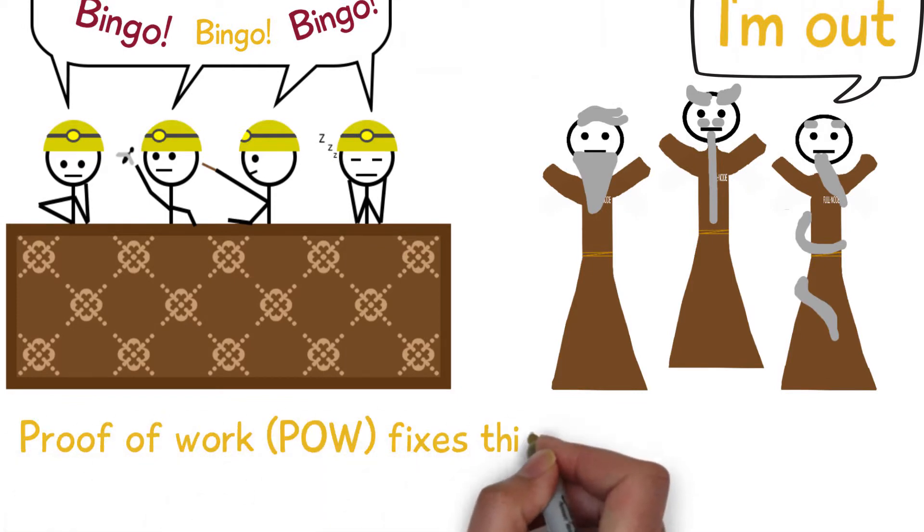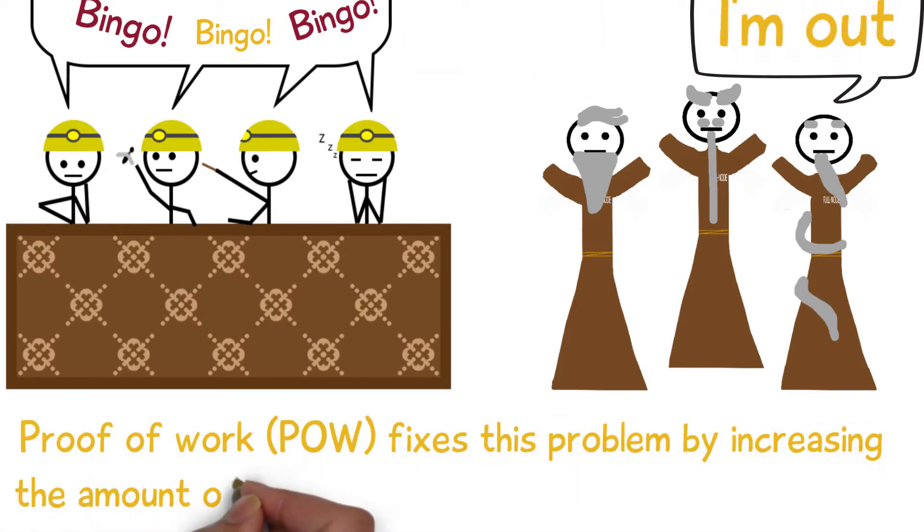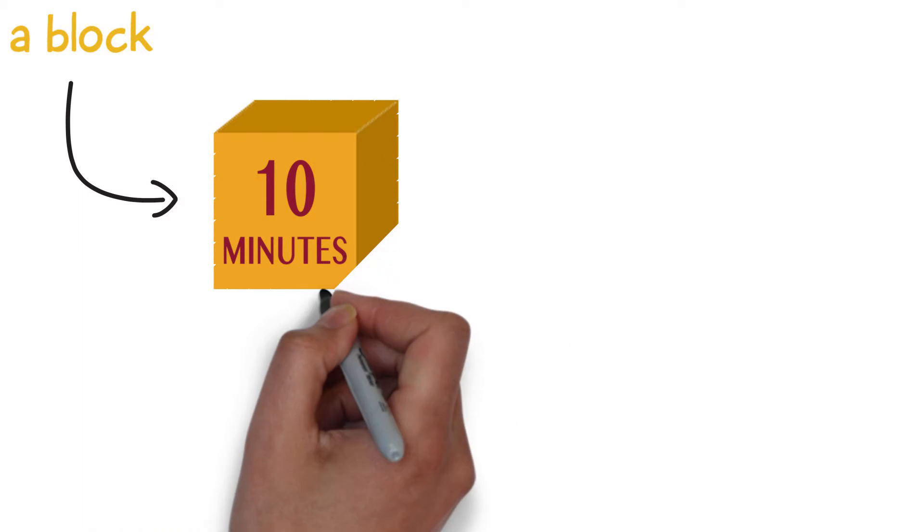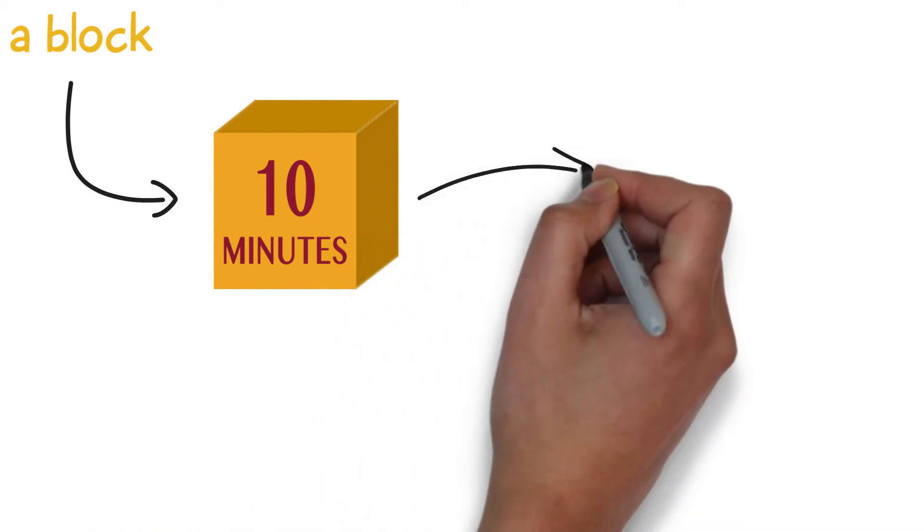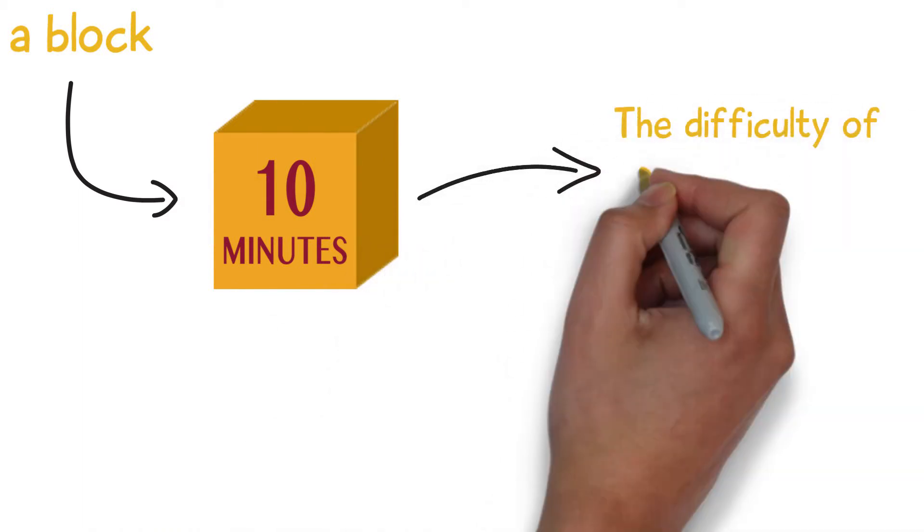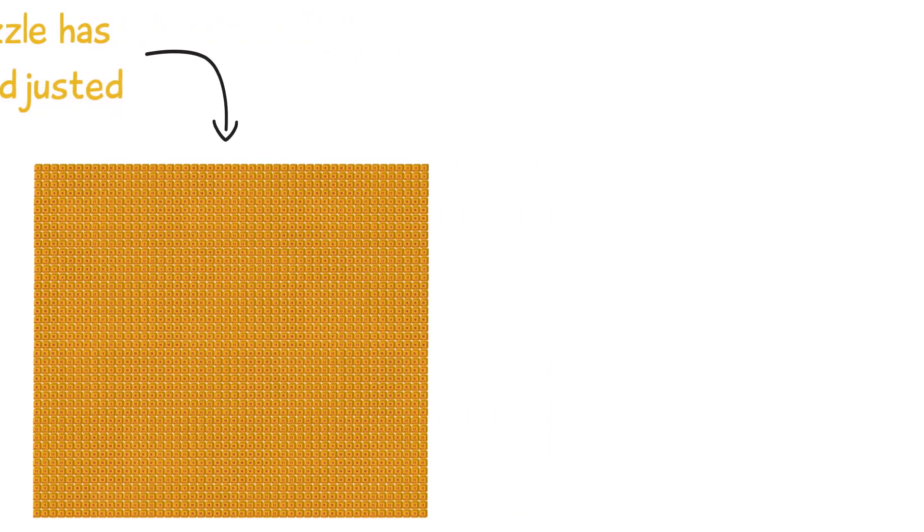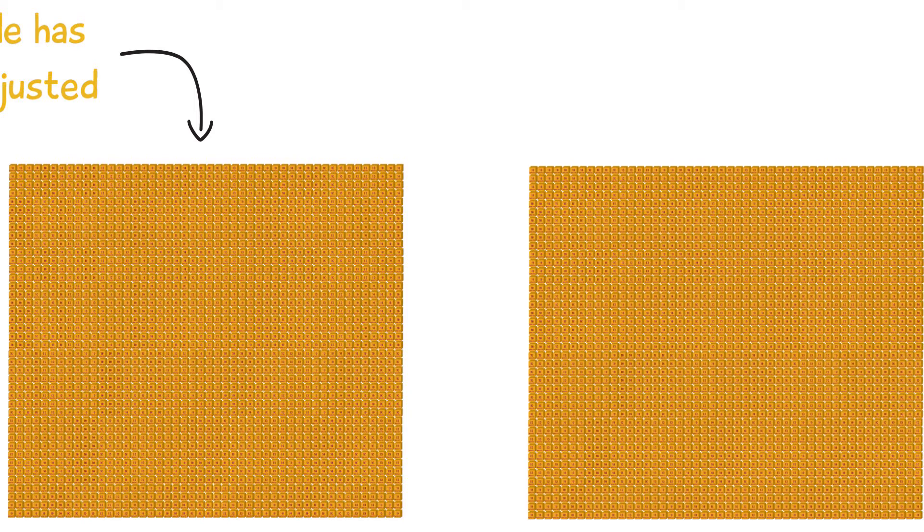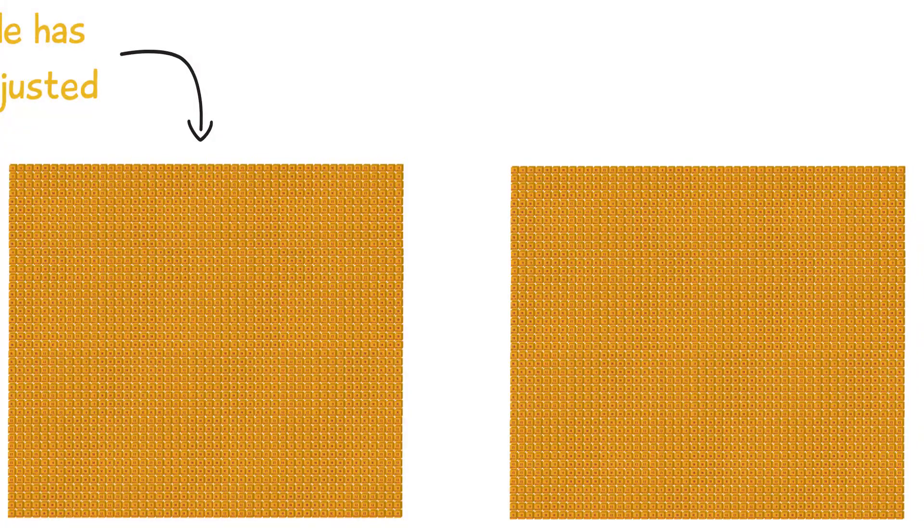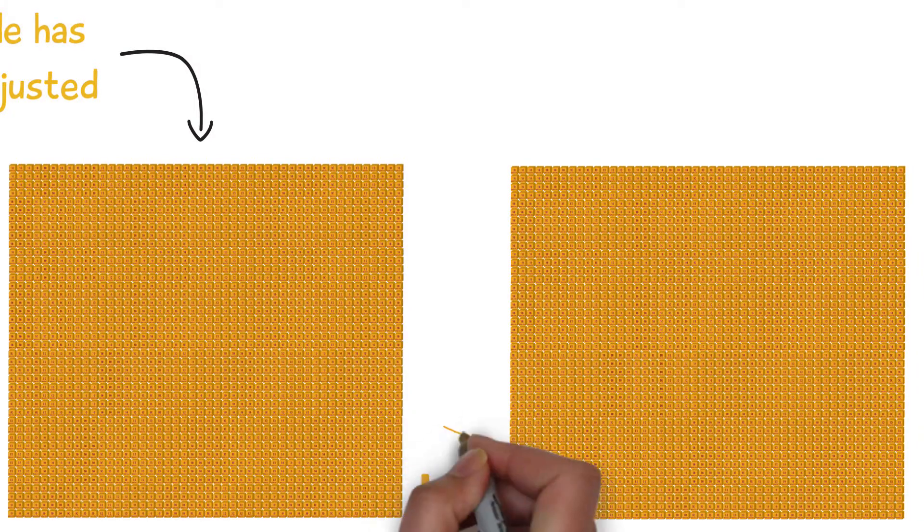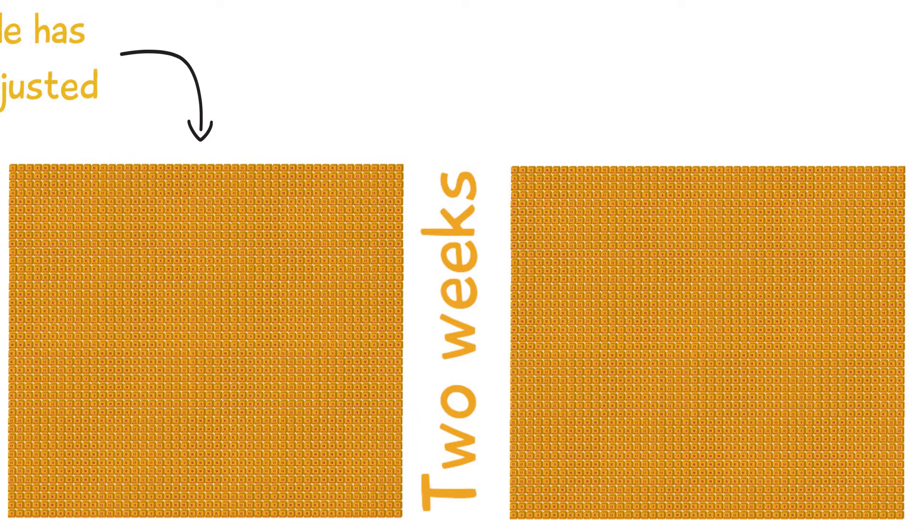Proof of work fixes this problem by increasing the amount of effort that is required to create a block. On average a block on the Bitcoin network will take 10 minutes to mine. In order for this to be possible the difficulty of the puzzle has to be adjusted according to how much computational power is being put into the mining process all throughout the network. This difficulty is changed every 2016 blocks based on how long it took to find the previous 2016 blocks. If each block would be created in 10 minutes this would amount to exactly two weeks of mining.